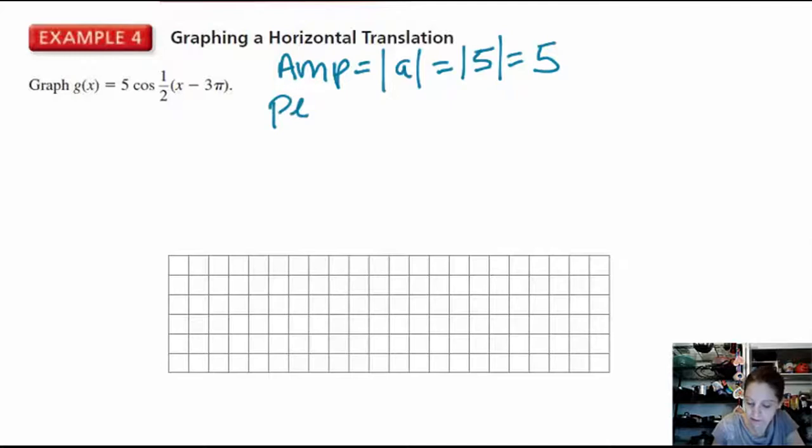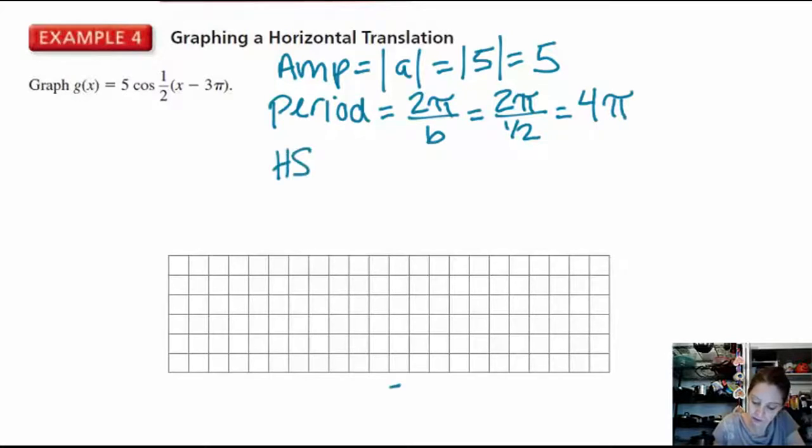The period is 2π over b. b is 1/2, so it's 2π over 1/2, which is really 2π times 2. The period is 4π. Horizontal shift is going to be 3π, so we're going to shift 3π units to the right, remember because it's minus h, and the vertical shift is 0. We're not going to draw a midline up or down, the x-axis is the midline.